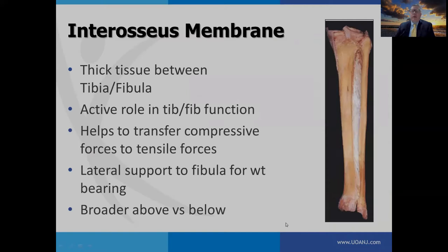The interosseous membrane travels between the tibia and the fibula. Consider it much like the sail on a ship — as the wind hits the sail, it gets tight. Similarly, as you bear weight going through dorsi- and plantar flexion and the fibula moves, it tensions the interosseous membrane, which helps transfer compressive forces from the talocrural joint to tensile forces where they can be dissipated up through the lower leg.